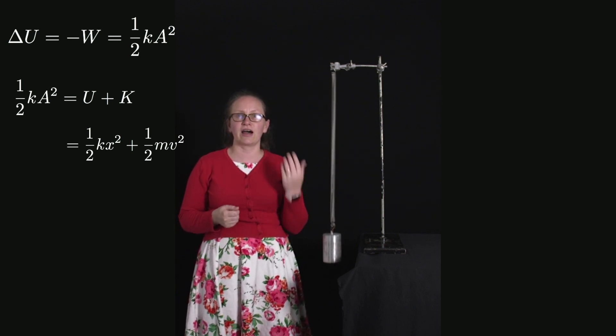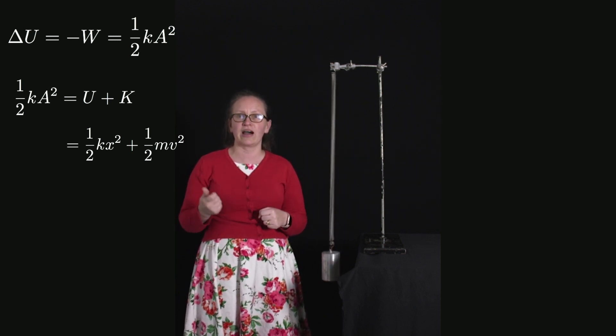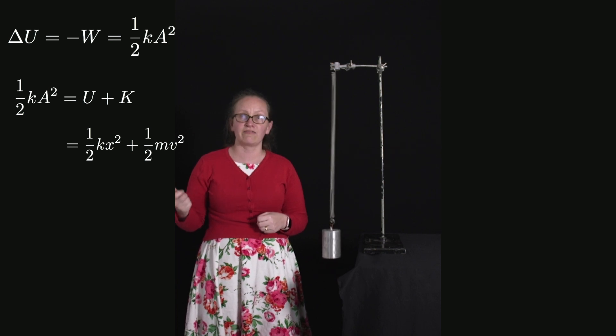So we've now got 1/2 k a² equals 1/2 k x² plus 1/2 m v².